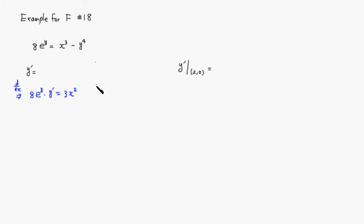So negative y to the fourth. Now this is written in y, so we have to do a chain rule. So it's negative 4y to the third, then multiply by y prime.